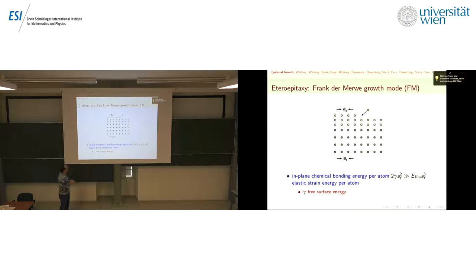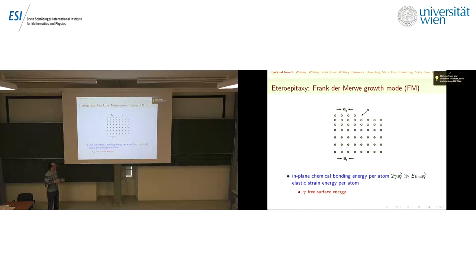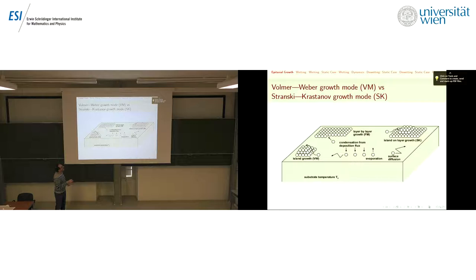As you keep depositing atoms, because the film atoms are trying to align themselves with the substrate, you keep creating more and more strain energy. Then, as you continue depositing, the flat film is no longer stable and you start creating islands. You can create an island like this type, or like this.